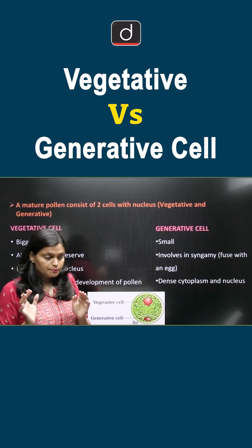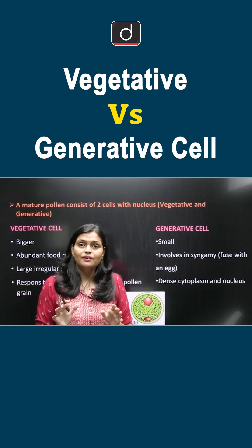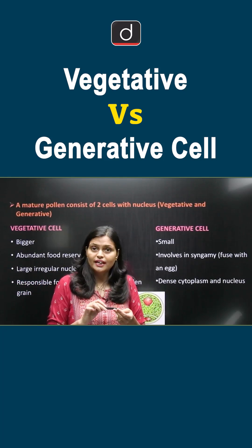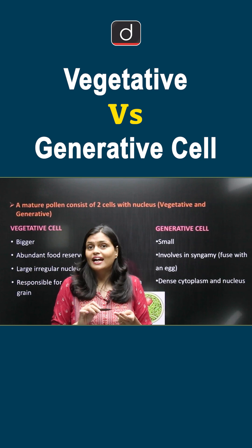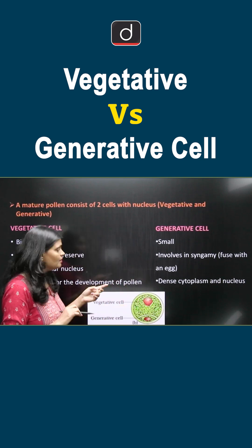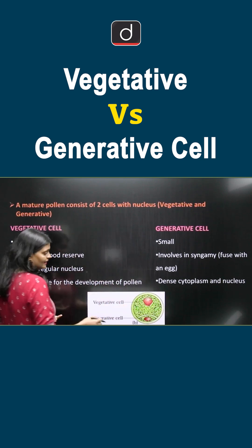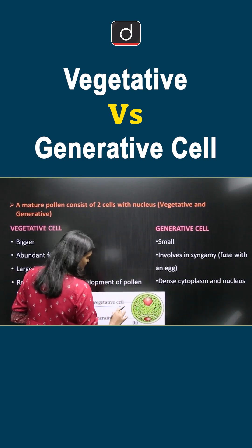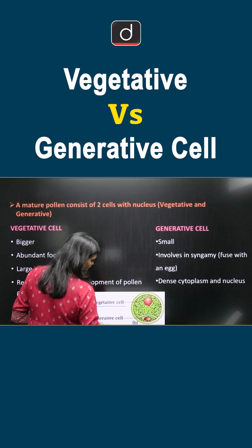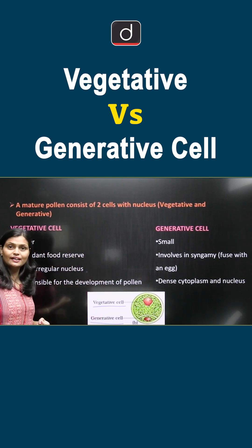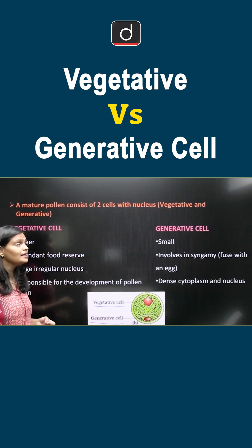Within the pollen grain, you have two types of cells: generative cells and vegetative cells.